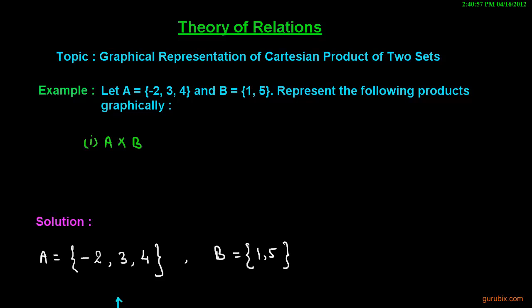The example is as follows: Let A = {-2, 3, 4} and B = {1, 5}. Represent the following products graphically. We have to represent A × B graphically.